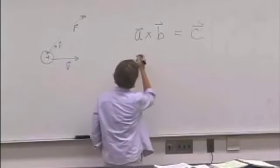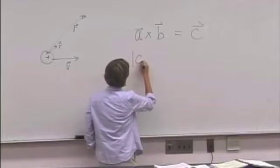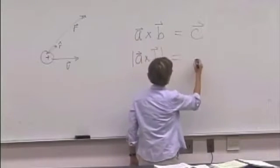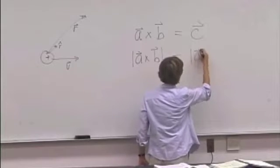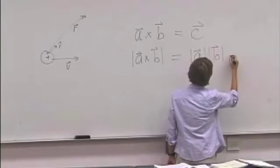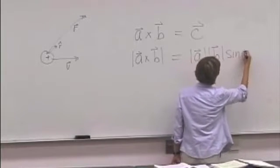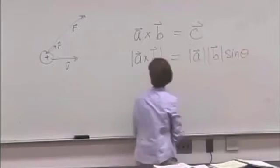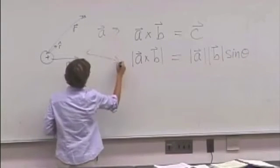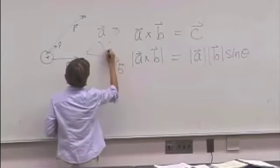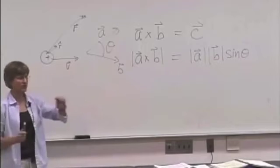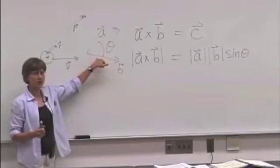So here's the quick way, which is related to what we saw here. The magnitude of the cross product is given by the magnitude of the first vector times the magnitude of the second vector times the sine of the angle between them. So if this is a, and that's b, and that's theta, ab sine theta, that's the magnitude of the cross product. Now does that correspond to what we saw?